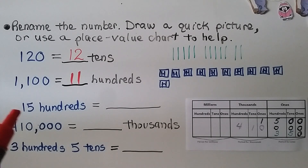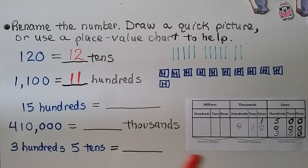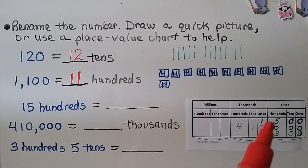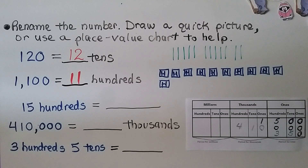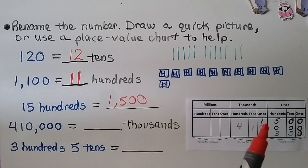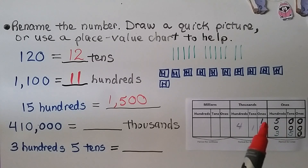This one says 15 hundreds. We need to rename it. Using a place value chart, we write 1 in the thousands place and 5 in the hundreds place to make 15 hundreds. We fill in the remaining places with zeros as placeholders, giving us 1,500. We could also have called this 150 tens — grouping those three digits together.